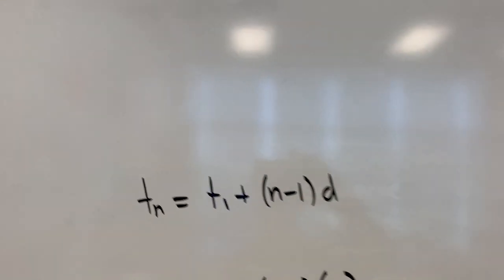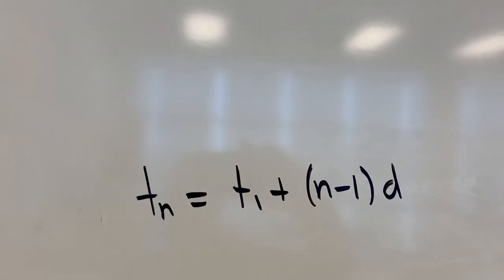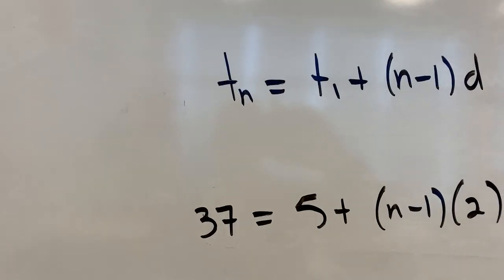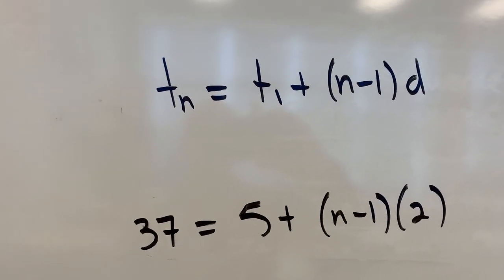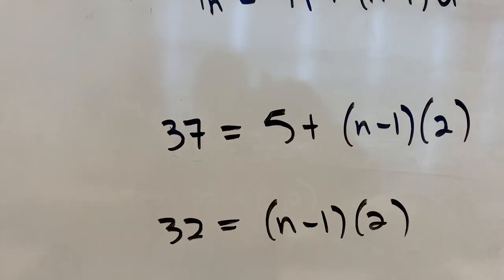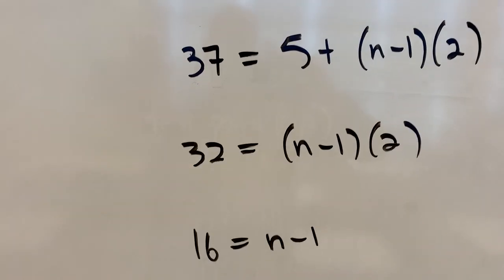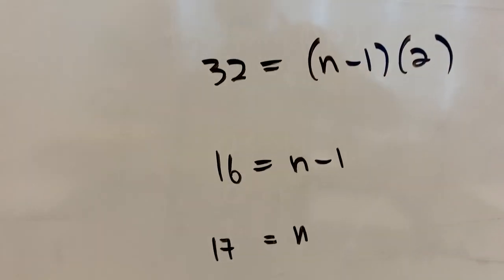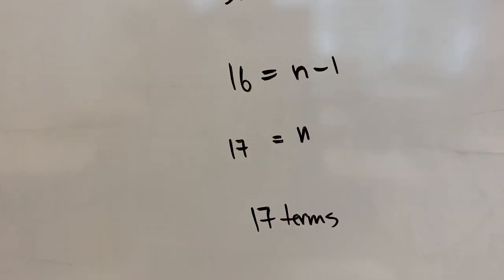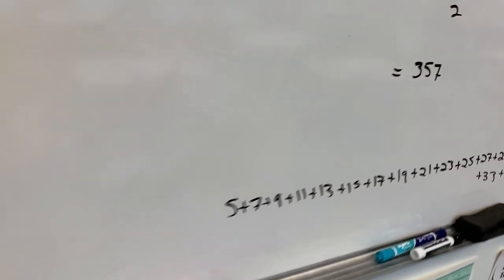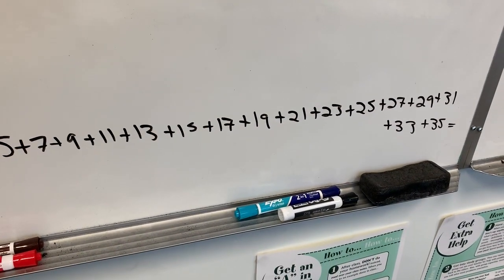So what I go back to is something we learned in 1.1, just the general term. I say, okay, well if 37 is the last term, the first term is 5, and the common difference is 2, how many terms is this? Subtract 5 from both sides, divide by 2 on both sides, add 1 to both sides, and I figure out there were 17 terms. I would have had to list out 17 terms to get up to 37.